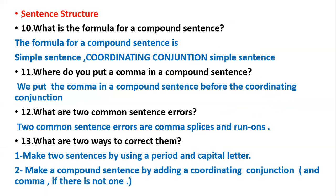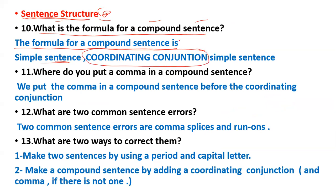Sentence structures. What is the formula for a compound sentence? The formula for a compound sentence is simple sentence, coordinating conjunction, simple sentence. The coordinating conjunctions are: for, and, nor, but, or, yet, so.